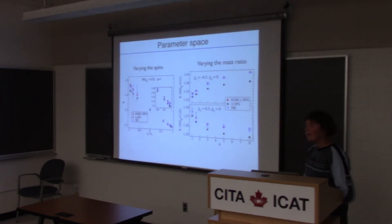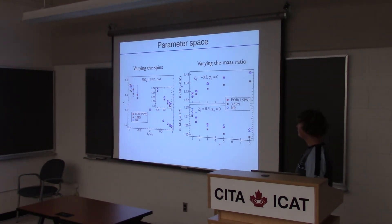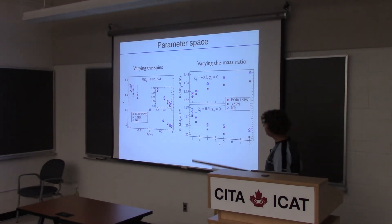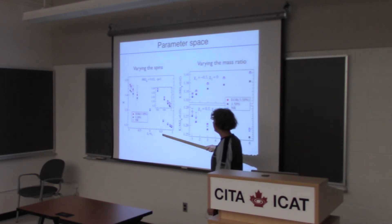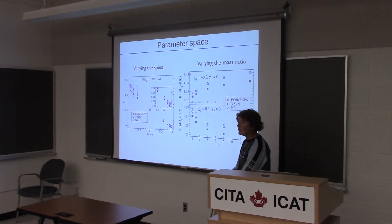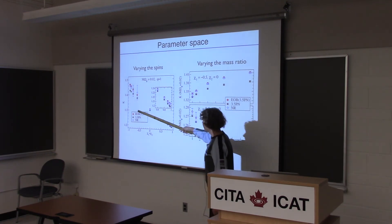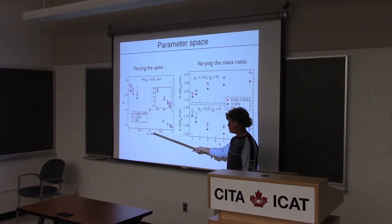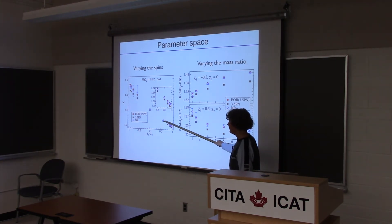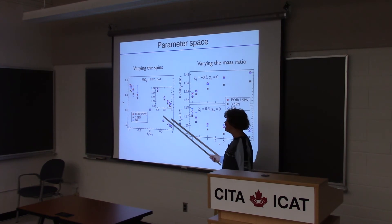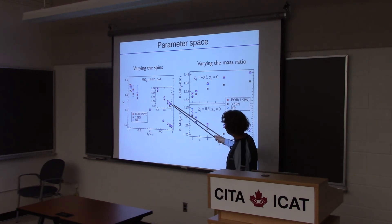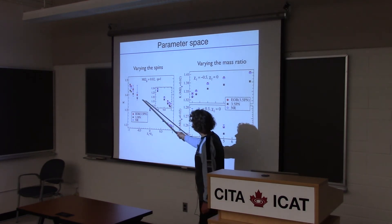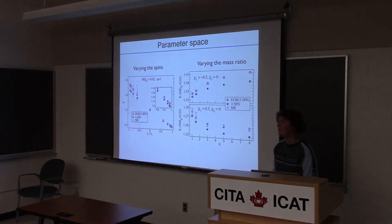Over the entire parameter space we could compare, there were a few cases that didn't work quite so well — mainly for anti-aligned spins. Looking at this peri-astron advance as a function of the spin parameter, the blue is the numerical relativity, red is EOB, and black is normal post-Newtonian. For aligned spins the agreement is very good, but as you go to anti-aligned it gets a bit worse, though not worrisomely so.